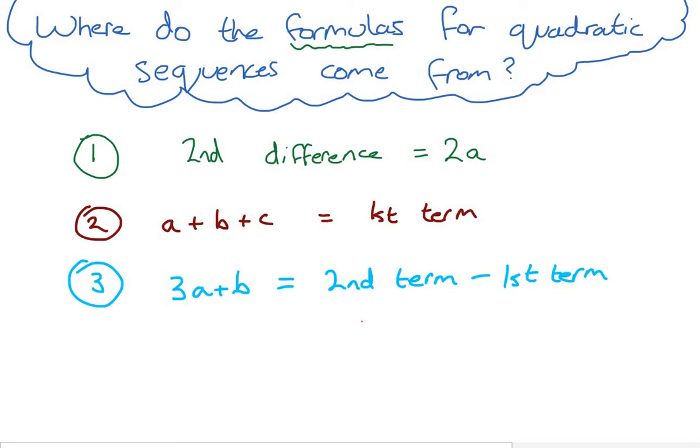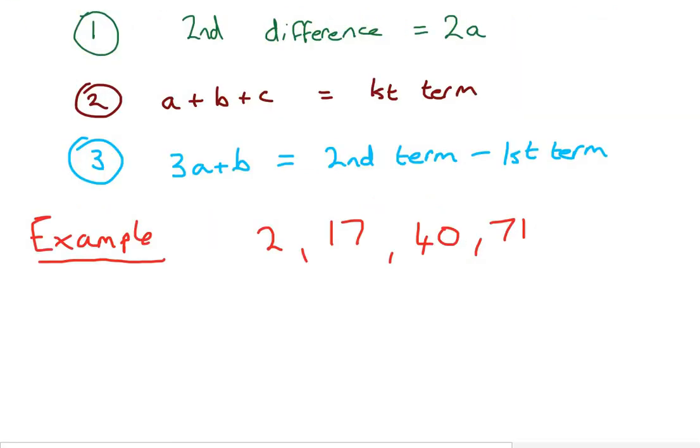And the third one says that 3a plus b is the second term minus the first term. Now, let's take a look at a quick example, and we'll come back to this once we understand the formulas. Right, so here's our example, and just as an illustration of this formula, this says that the coefficient of our sequence, which will look something like this, an squared plus bn plus c,